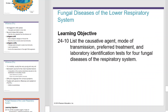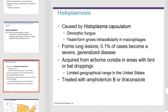Fungal diseases of the lower respiratory system: histoplasmosis is caused by Histoplasma, which is a dimorphic fungus, almost like yeast. It forms lung lesions. About one-tenth of one percent of cases becomes severe. It's acquired from airborne conidia in areas with bird or bat droppings. It has a limited geographical range in the United States.